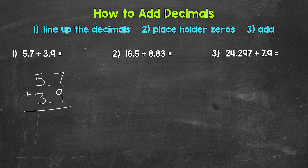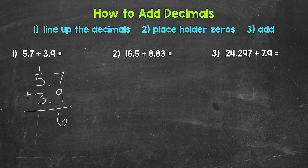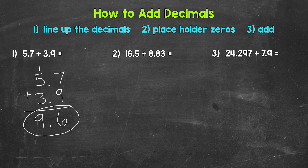Our second step is to use placeholder zeros if necessary. For number one, we're not going to use any placeholder zeros — we don't need them. But for numbers two and three, we will. Now we move on to step three, and that's to add. We'll start with seven plus nine, which gives us 16. So we just added the tenths place. After the tenths place, we need the decimal, and we bring that straight down. The decimal is lined up throughout the entire problem, even in the answer. Now we add the ones place: one plus five is six, plus three is nine.